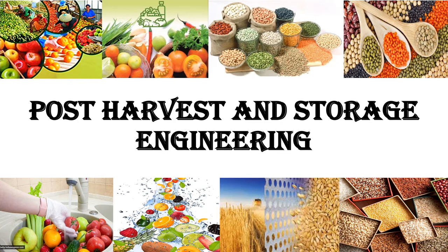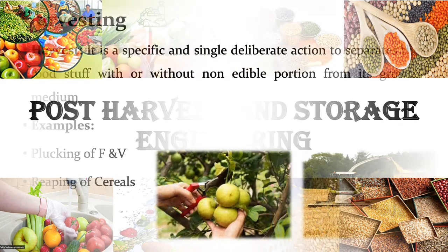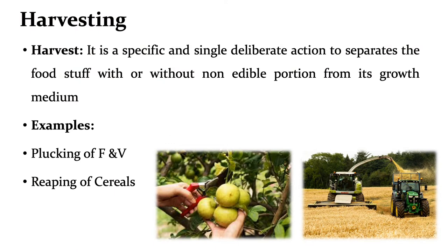Let us start with the introductory part. First one is harvesting. What is meant by harvest? It is a specific and single deliberate action to separate the foodstuff with or without its non-edible portion from its growth medium. For example, plucking of fruits and vegetables from the plant by using harvesting tools like a cutter or knife, or the ripping of cereals by using a ripper binder or combined harvester, in which the harvesting and cleaning action is carried out simultaneously.